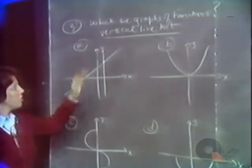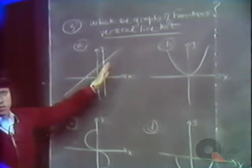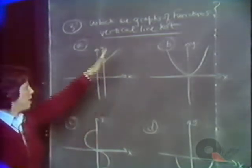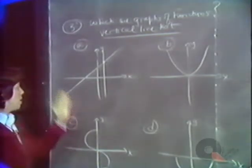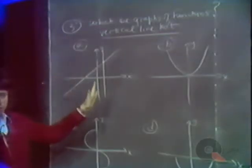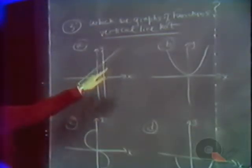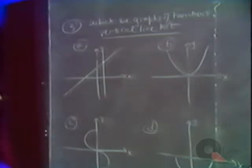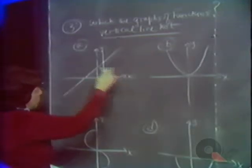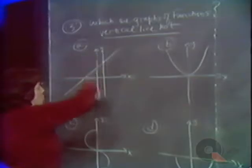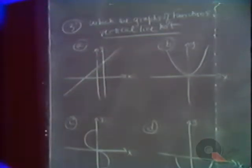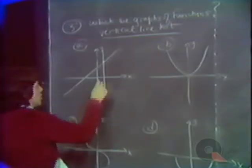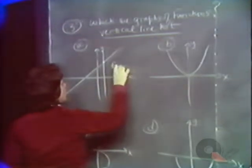The vertical line test tells us: if we have a graph and we're not sure if it's a function, we draw vertical lines throughout the domain. If each vertical line crosses the graph exactly once, then it is the graph of a function — because for that x there is one and only one y value. We can see that curve A certainly qualifies: every vertical line drawn through the domain cuts the curve exactly once, so we have a function.